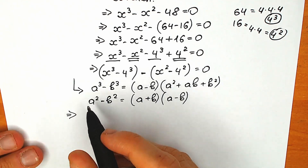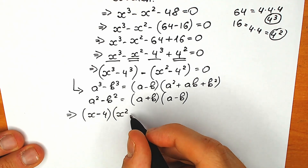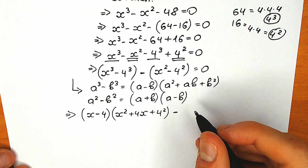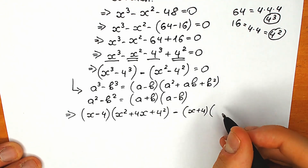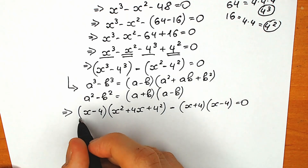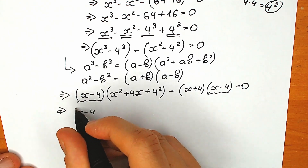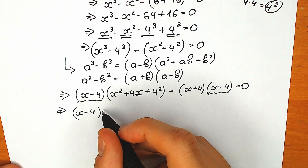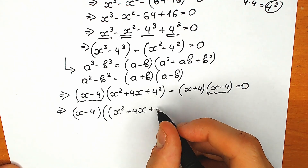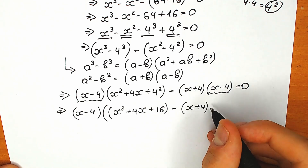Let's continue. For the difference of two cubes we have (x minus 4) times (x-square plus 4x plus 4-square). And we have minus the difference of two squares, which gives (x plus 4) times (x minus 4), equal to zero. Right now we can easily factor out (x minus 4) — we have x minus 4 both here and here. So we have (x minus 4) times the remaining expression, and from the squares part we have only (x plus 4), equal to zero.